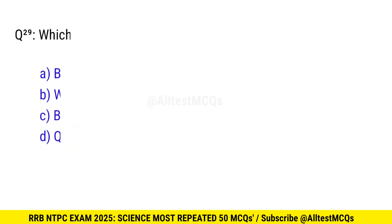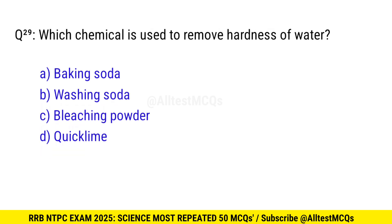Question 29. Which chemical is used to remove hardness of water? Correct option is B, washing soda.